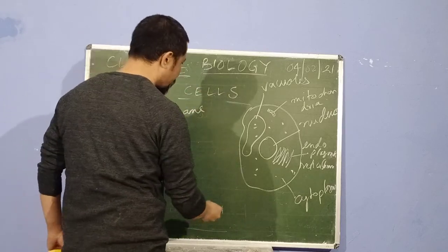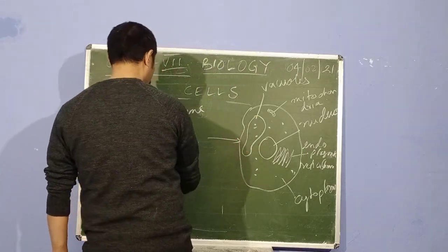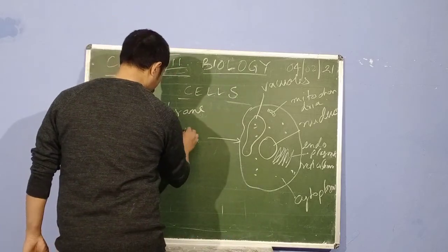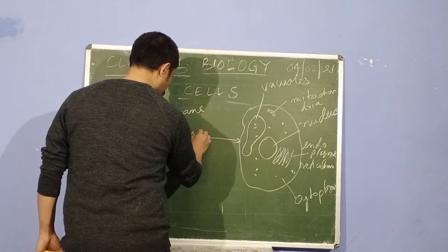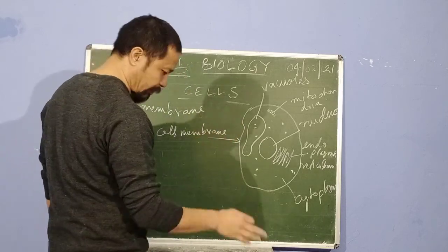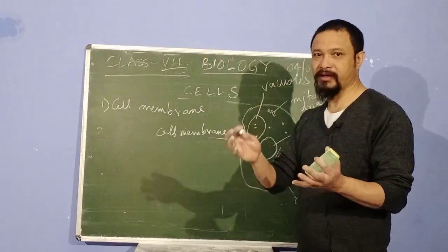Cell membrane is the outermost cover in an animal cell, but in a plant cell there is another cover called the cell wall. So I'm going to get to that. Cell membrane is a kind of a film covering around a cell.